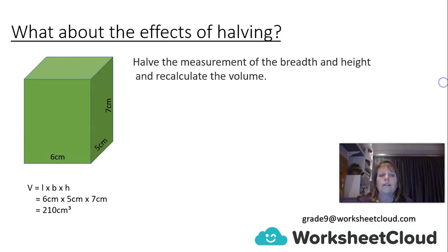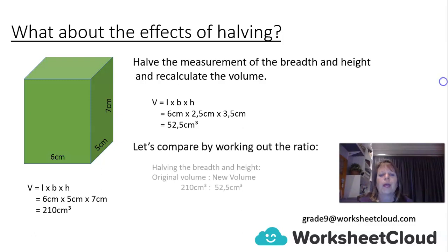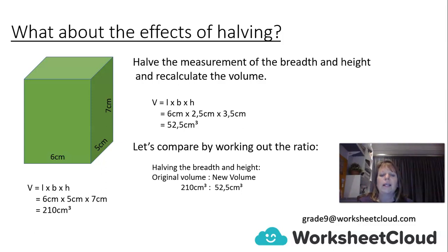Let's do the last combination — halving the breadth and the height. The breadth 5 becomes 2.5 and the height 7 becomes 3.5. So 6 times 2.5 times 3.5 gives us 52.5 cm cubed. Once again, the ratio of 210 to 52.5 is 4 to 1, meaning it is a quarter of the original volume.